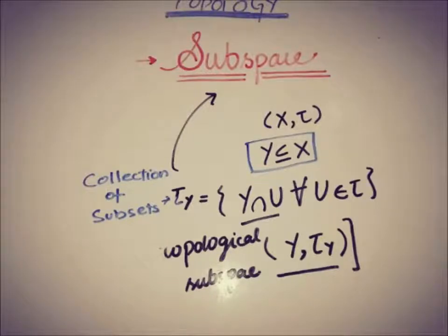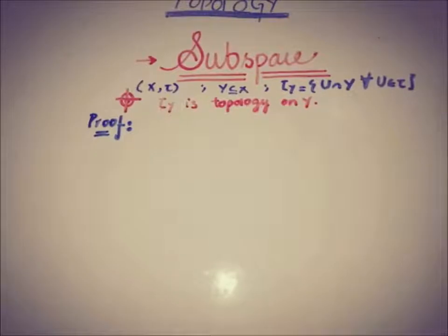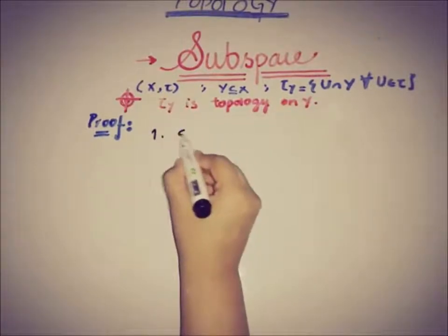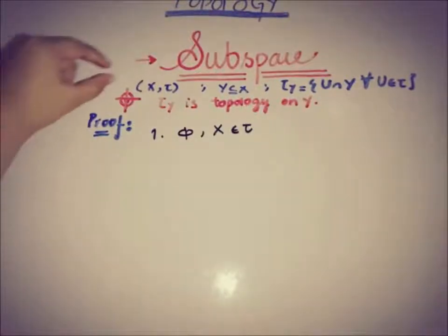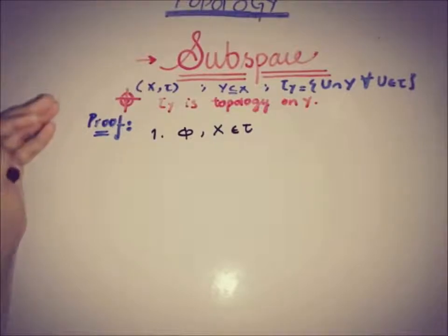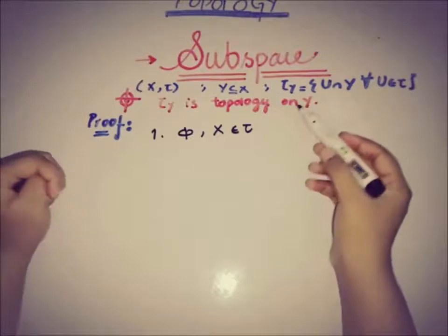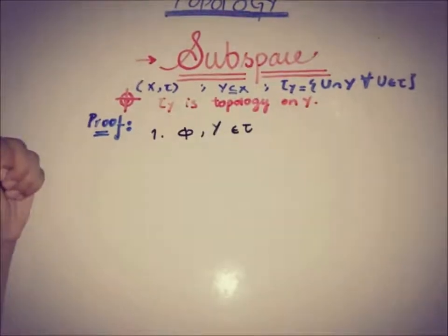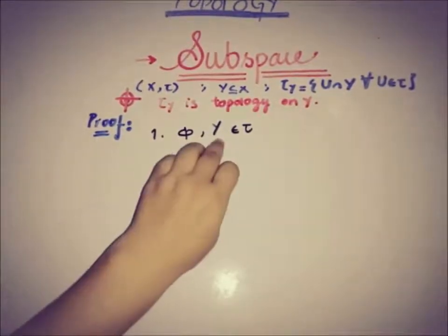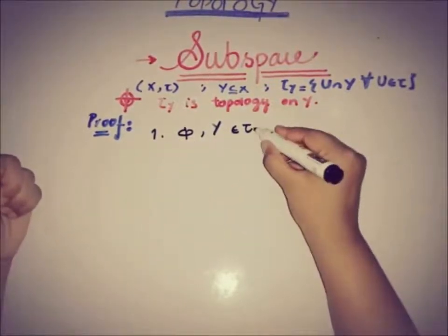In the previous video, we defined the subspace topology and now we will see how to prove that τ_Y is a topology on the set Y. By definition, there are three main properties that must be fulfilled by any collection of subsets to be a topology. The first is that the empty set and the set itself belong to τ. In our case, the target is τ_Y being a topology on Y, so empty set and the whole set Y must be contained in topology τ_Y.